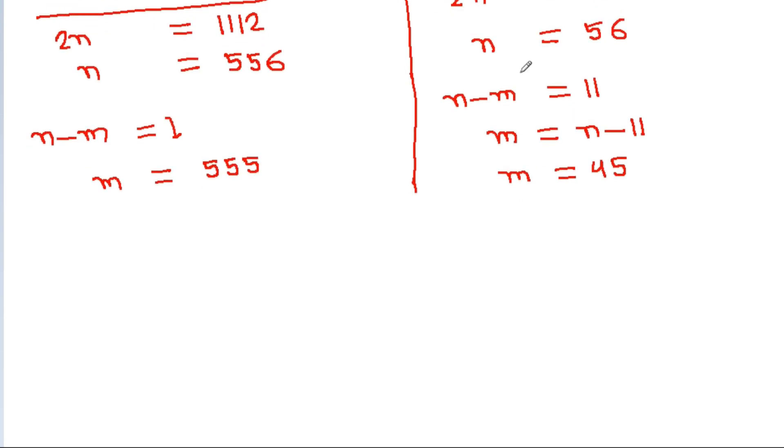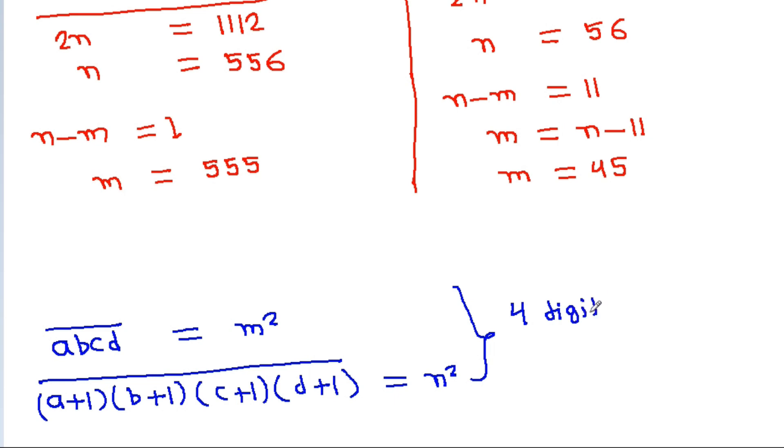And note that A, B, C, D is equal to M squared, and A plus 1, B plus 1, C plus 1, D plus 1 is equal to N squared. That means M squared and N squared, these are 4 digit numbers.